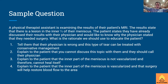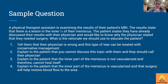Sample question: A physical therapist assistant is examining the results of their patient's MRI. The results state that there is a lesion to the inner two-thirds of their meniscus. The patient states they have already discussed results with their physician and would like to know why the physician stated they needed surgery. What rationale should we use to educate this patient? One: tell them the physician is wrong and this can be treated conservatively. Two: explain to the patient you cannot discuss this topic and they should call their physician. Three: explain the inner part of the meniscus is not vascularized and therefore cannot heal itself. Four: explain the inner part is vascularized and surgery will restore blood flow.